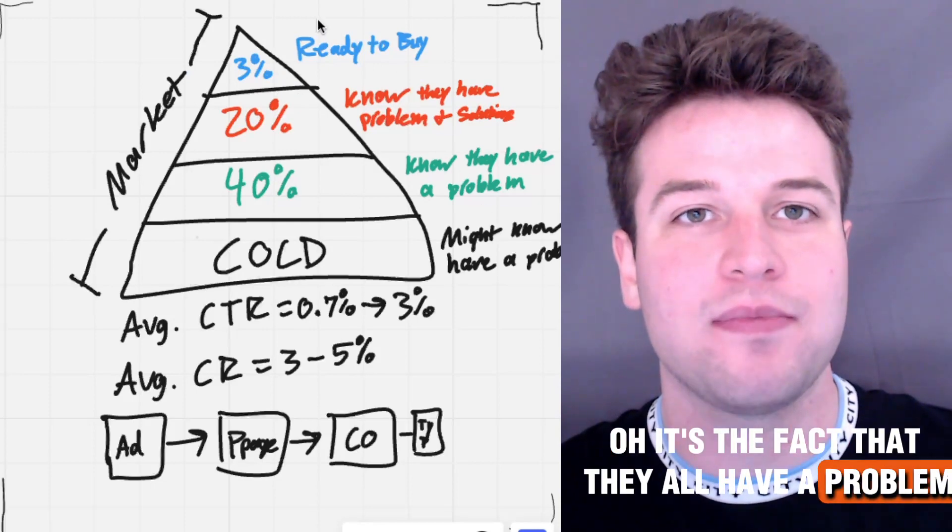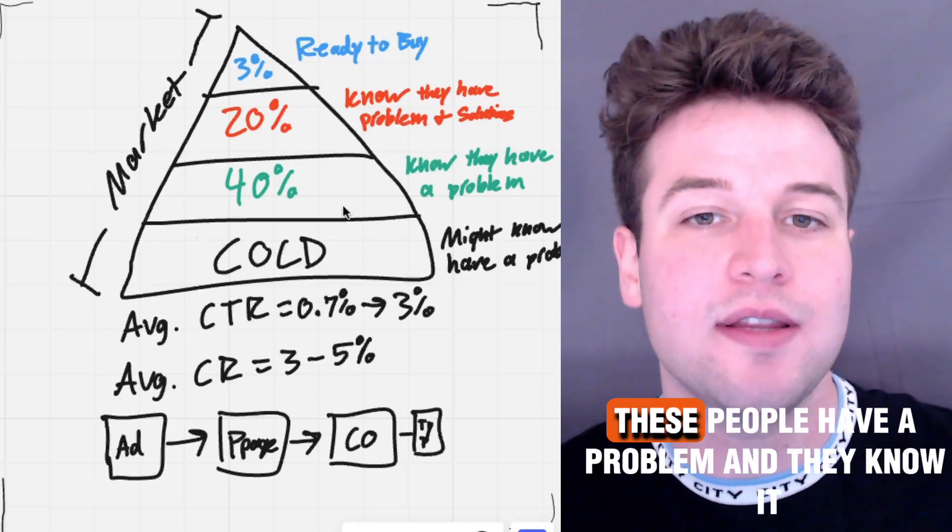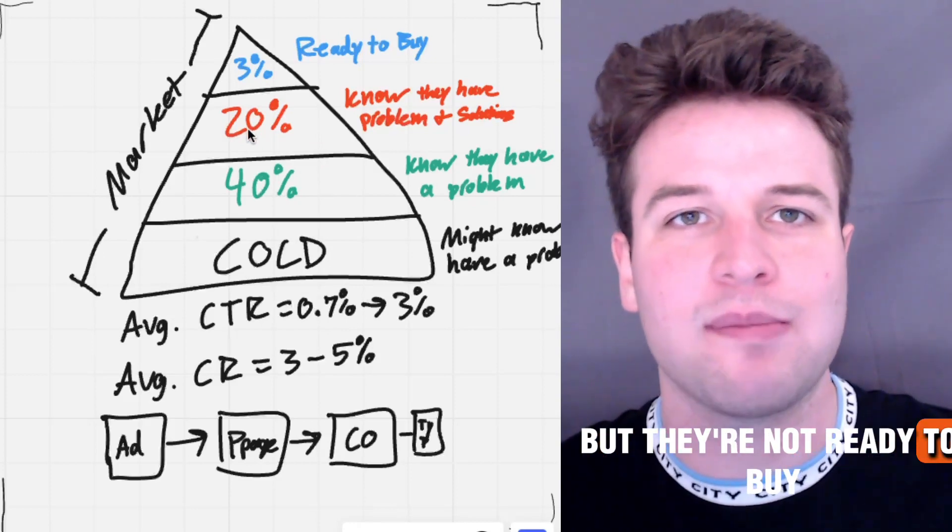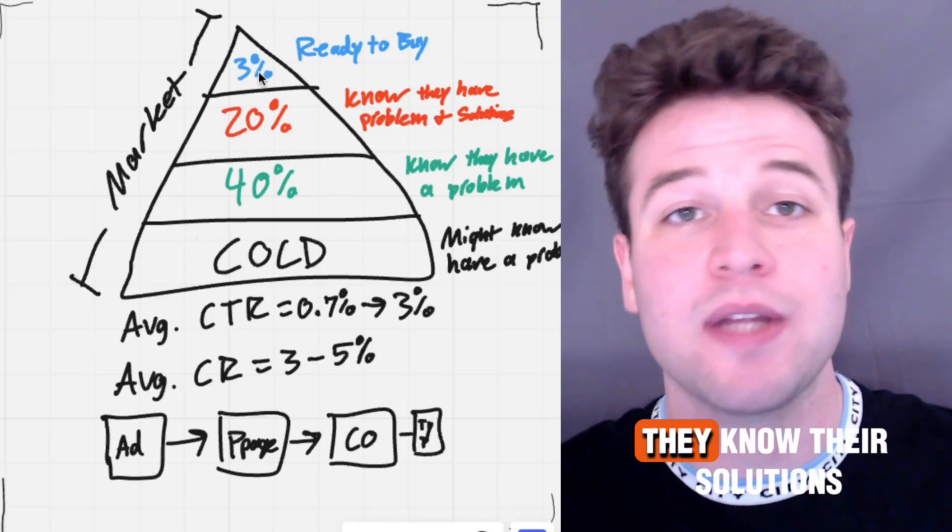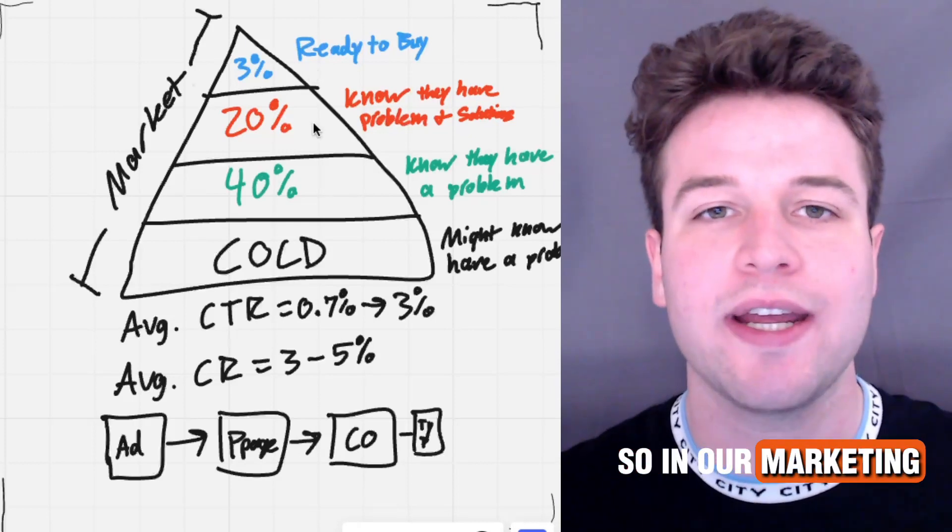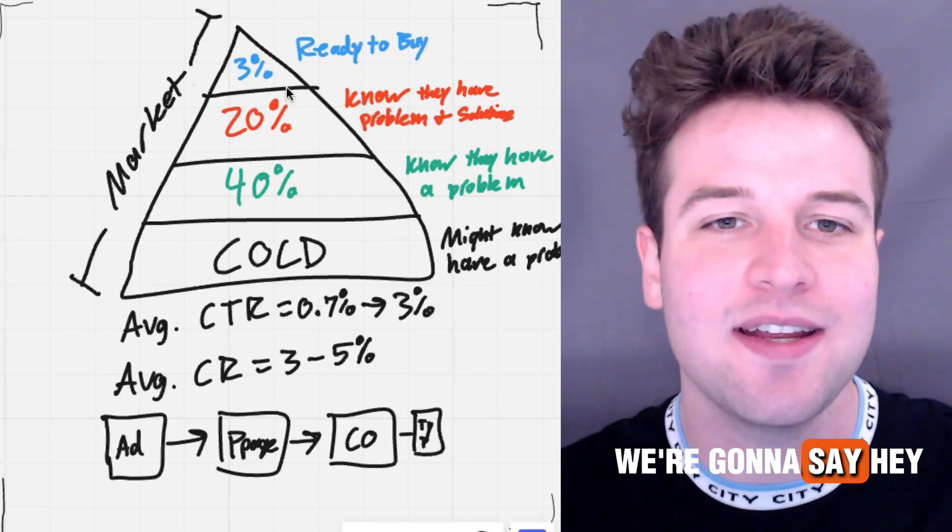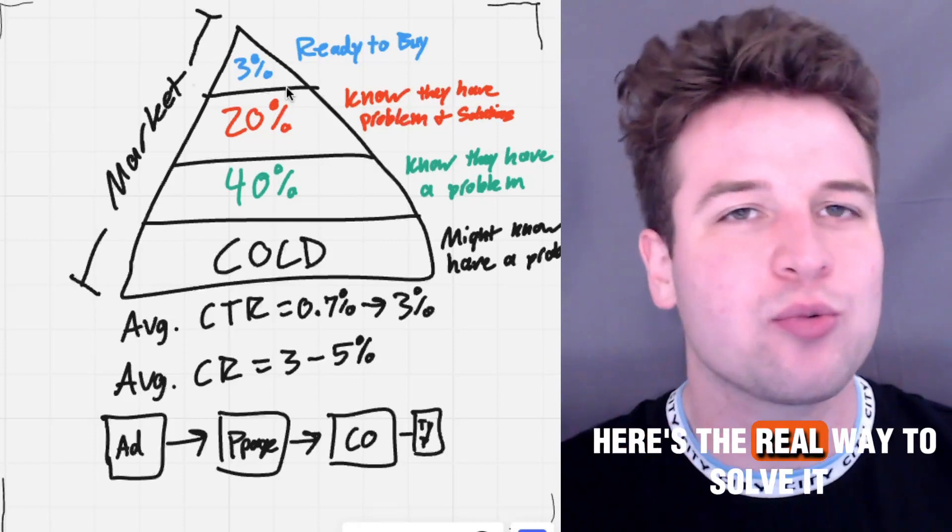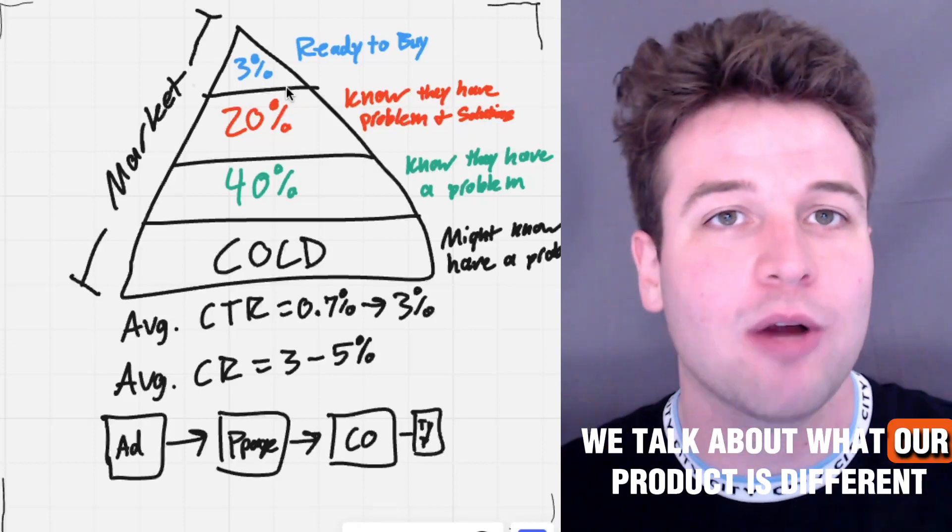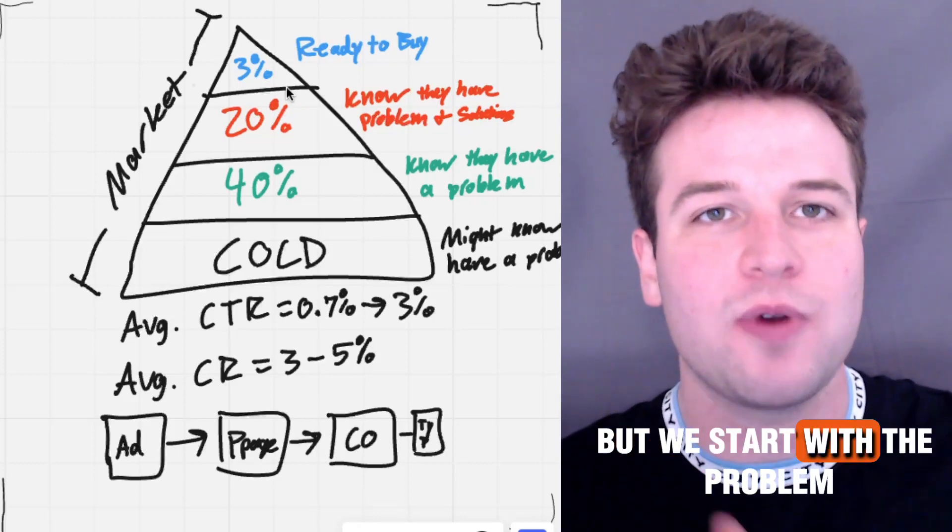So how do we fix it? Well, we can focus on everybody in this market by targeting the one thing that they all have in common. What's that one thing that they all have in common? Oh, it's the fact that they all have a problem. Everybody in this market has a problem. These people have a problem. They just don't know it yet. These people have a problem and they know it. They don't know that there's solutions. These people have a problem and they know there's solutions for it, but they're not ready to buy. These people know that they have a problem. They know their solutions and they're ready to buy. All of these people have the same problem. So in our marketing, instead of just putting out a product in front of somebody and saying, hey, go buy this thing, we're going to say, hey, are you dealing with this problem? Here's the real way to solve it. And then we talk about the unique solution. We talk about the unique mechanism. We talk about what our product is different. You know, what makes it different? We talk about all the things related to the problem, but we start with the problem.